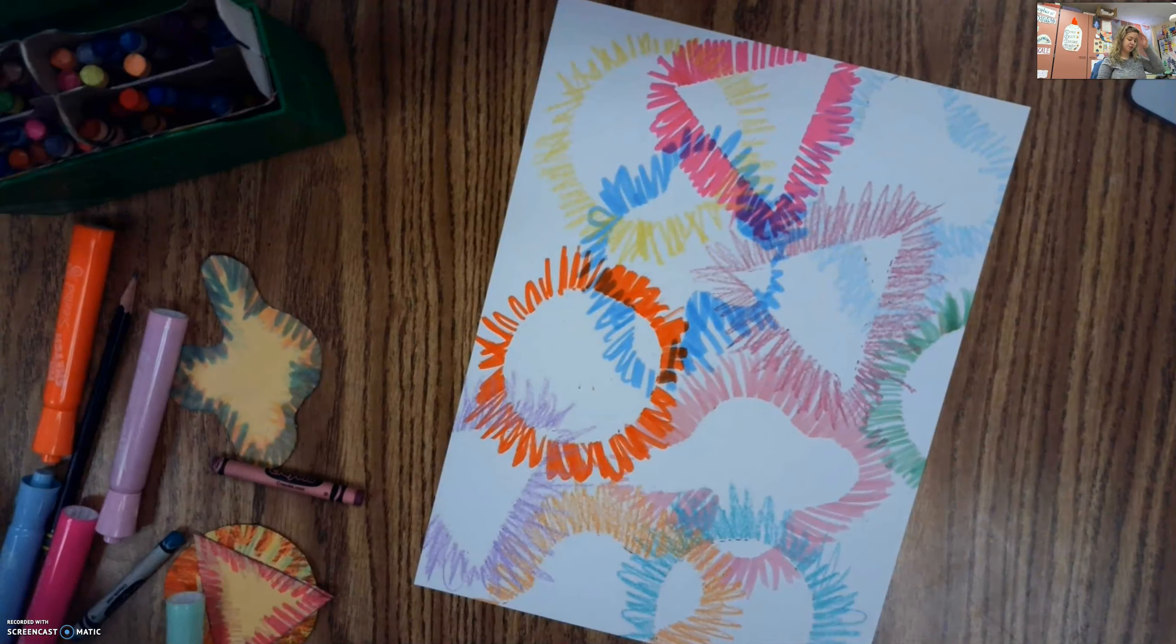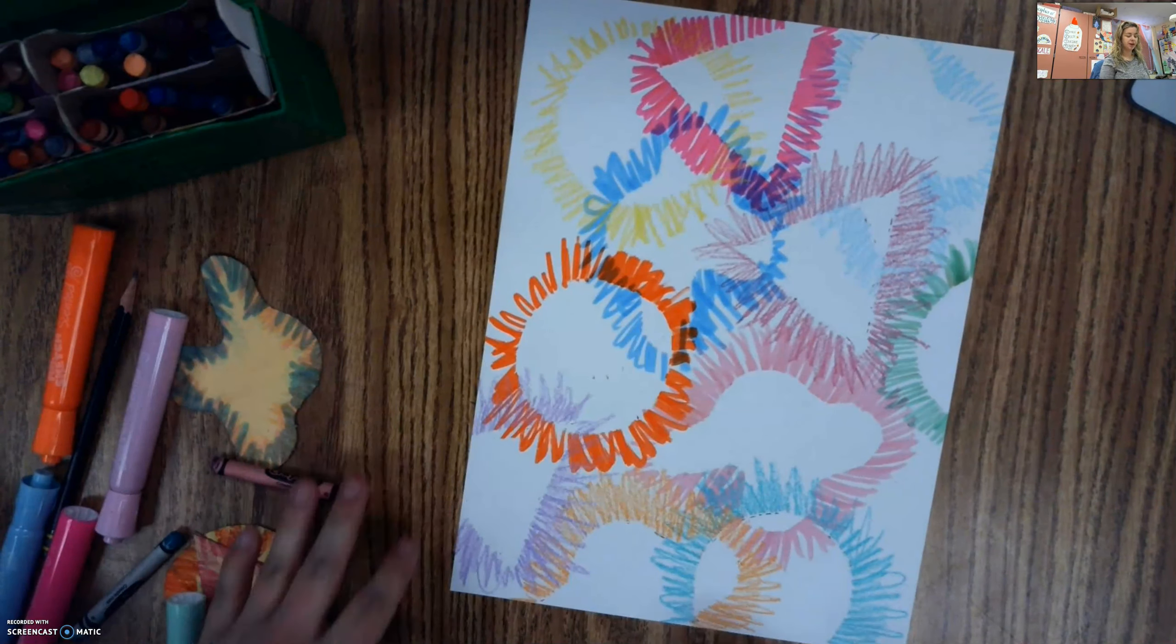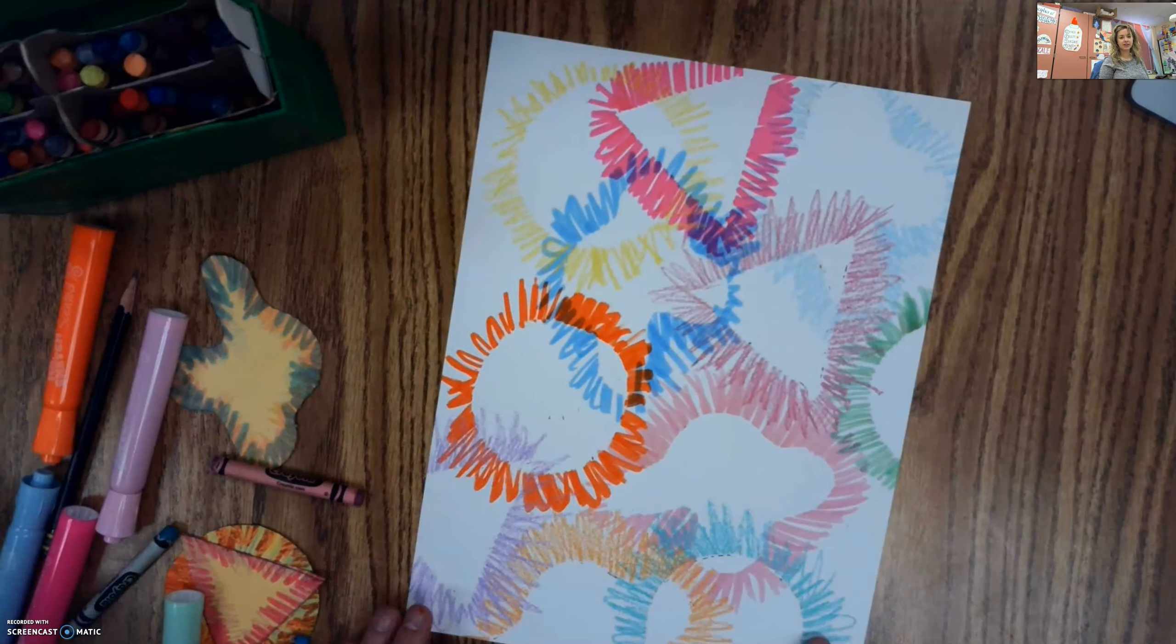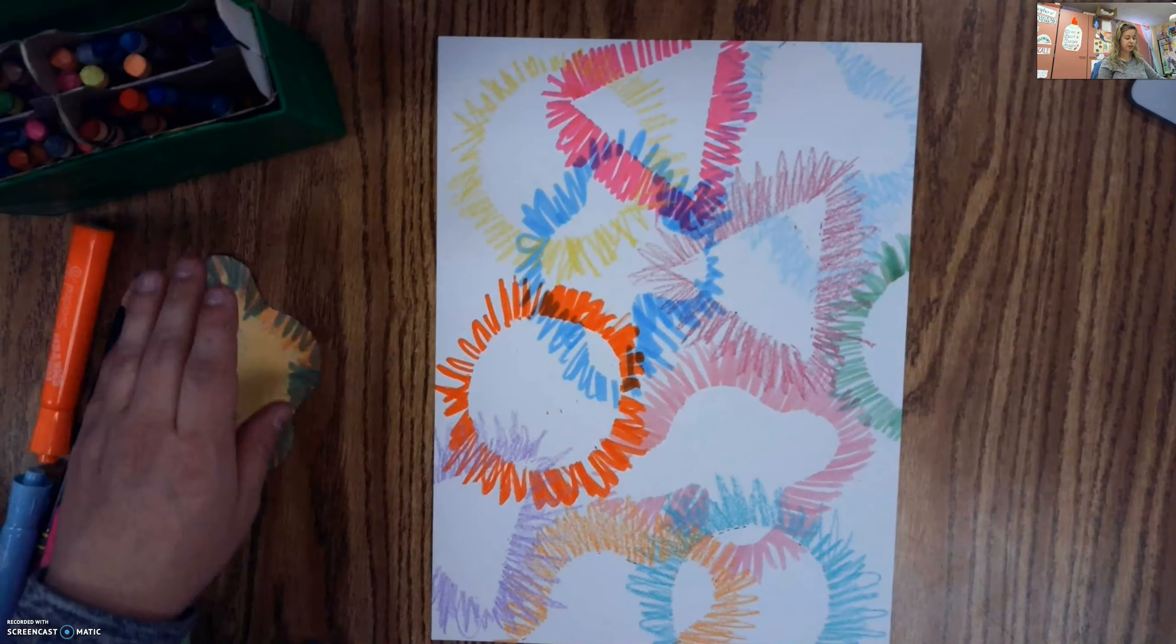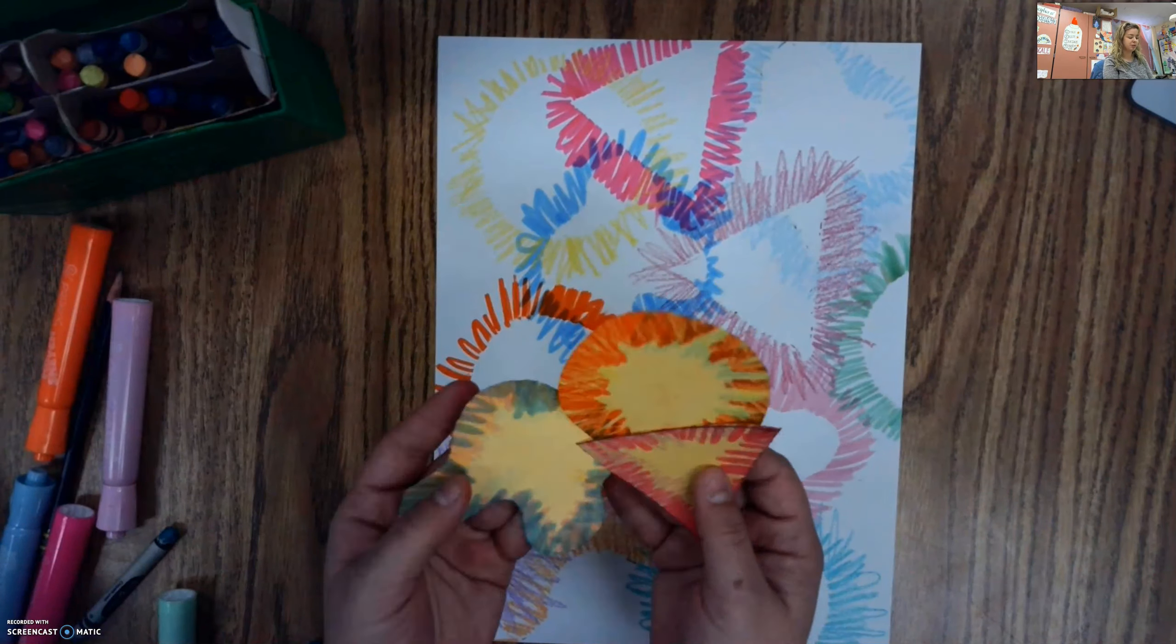But I kind of like the balance of it all. I kind of like that there's some white open areas amongst all the colors. So I'm happy with it. And I think I'm going to leave it like this. I think I ended up tracing each of these four or five times around my paper.